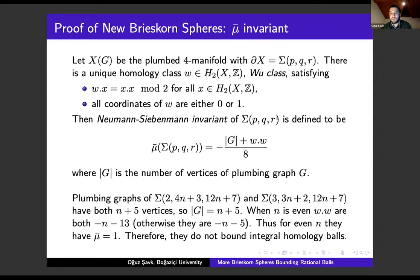The plumbing graphs of Σ(2,4n+3,12n+7) and Σ(3,3n+2,12n+7) both have n+5 vertices, so |G| = n+5. When n is even, they are both -n-13, otherwise they are -n-5. Thus, for even n, they both have μ = -1. Therefore, they do not bound integral homology balls.